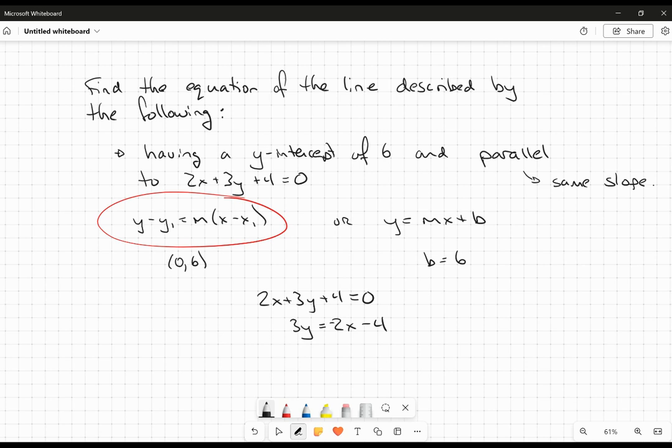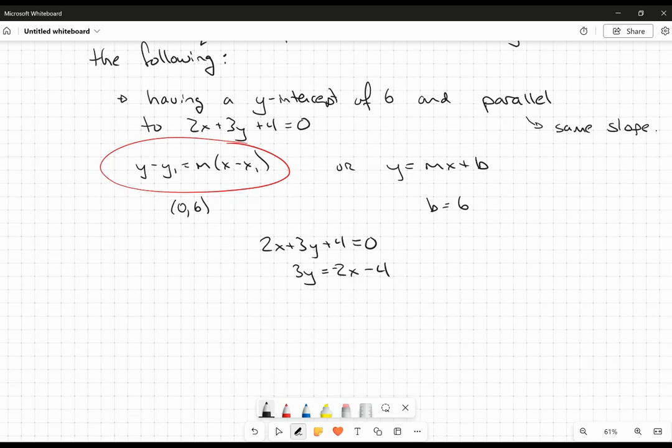So I'm going to bring the 2x and the 4 over. So 3y is equal to negative 2x minus 4. And then I'm going to divide by 3. And I can see, therefore, that my slope is going to be negative 2 thirds.